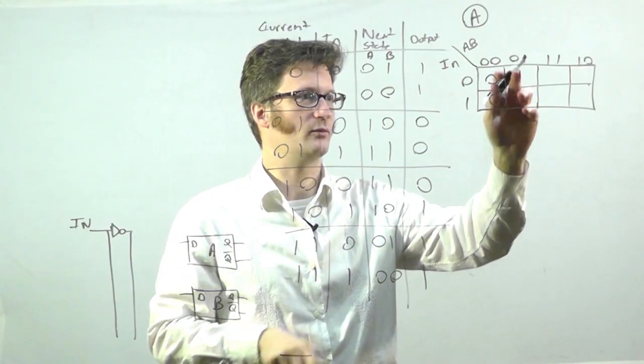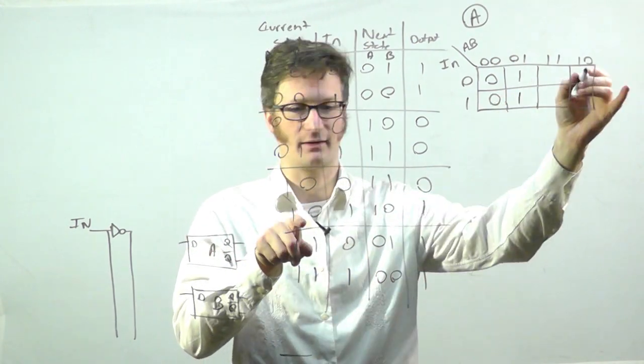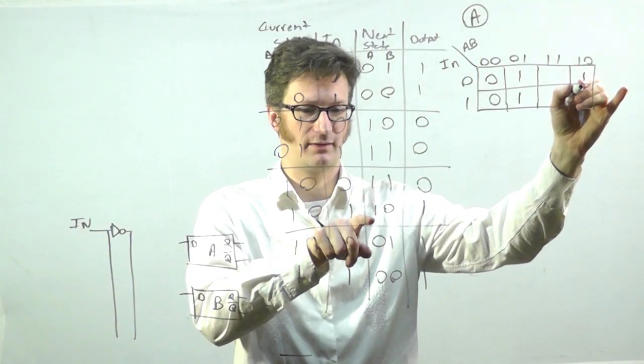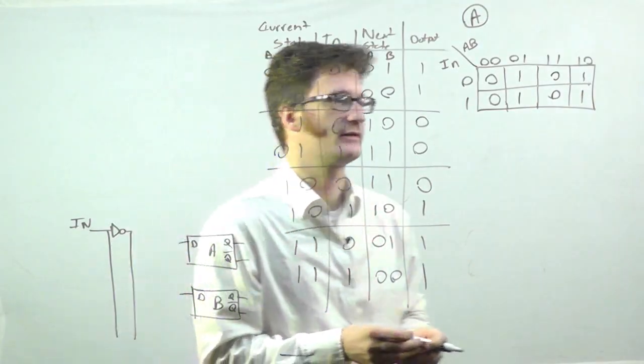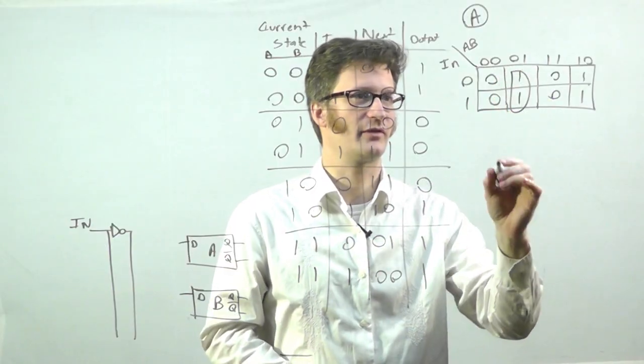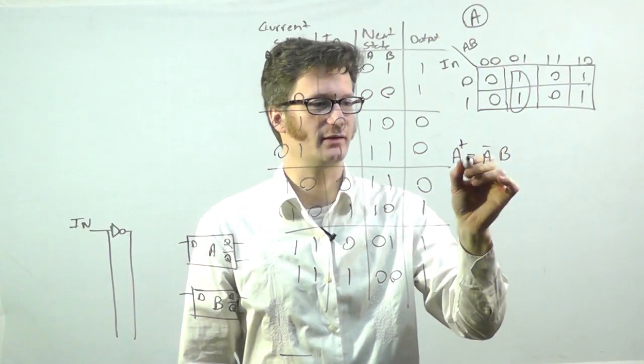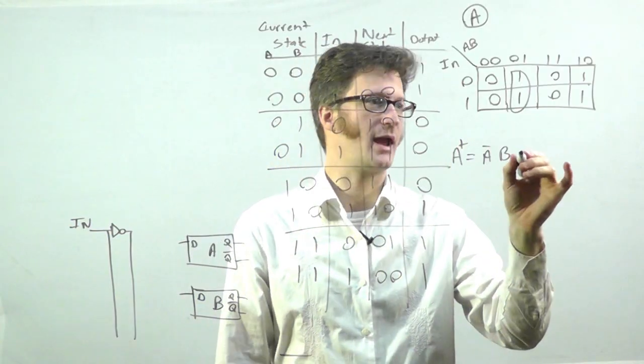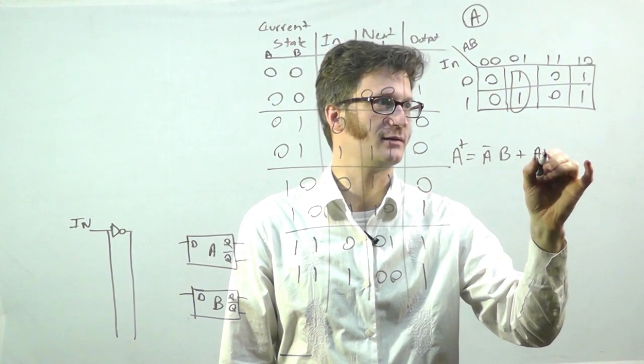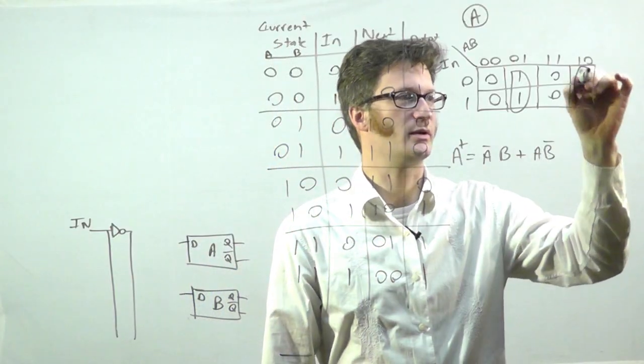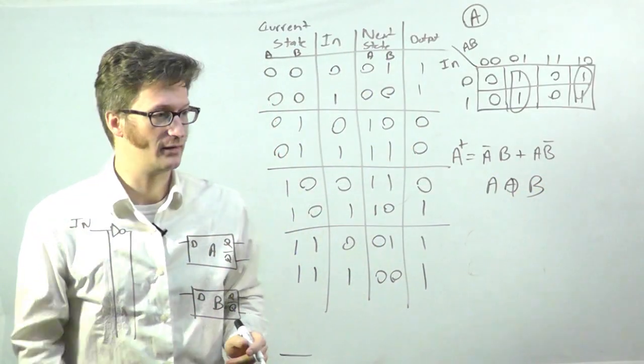0, 1, and 1, which is here, I need to have a 1. So, you can see I'm just going down the line here. This one's a 1, that one's a 1, 0, 0. Alright, so, what we have is we have the product terms A bar B. So, the next state for A, is going to be A bar B or A B bar. Which actually, through happy chance, is A exclusive or B.